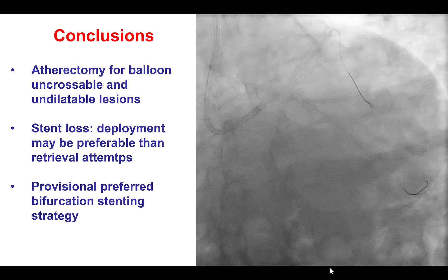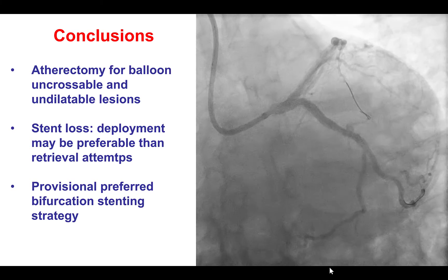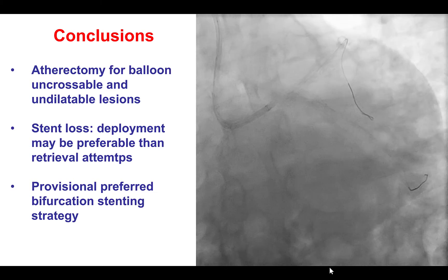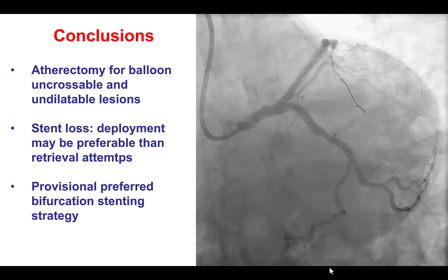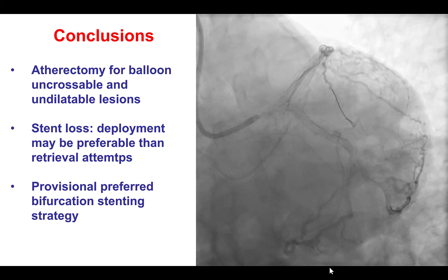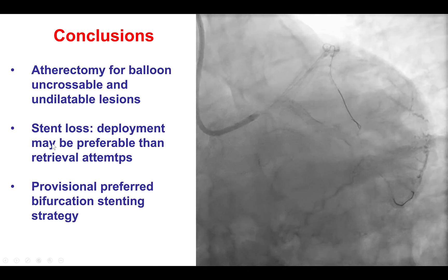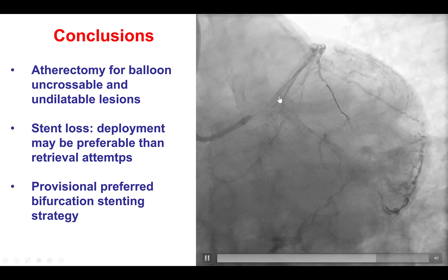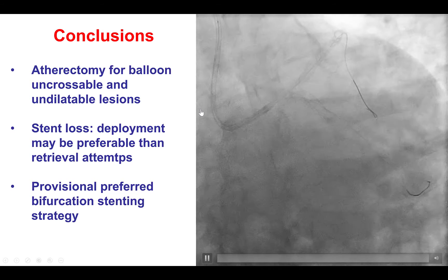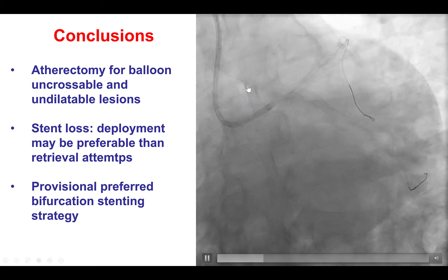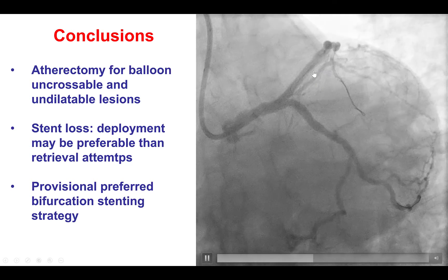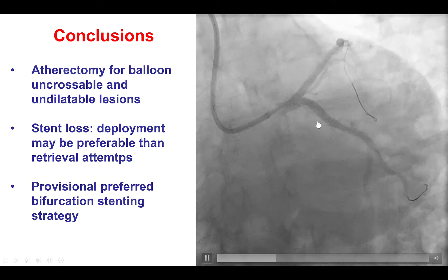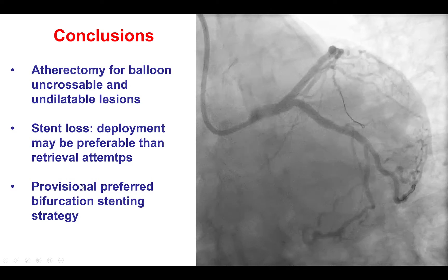In summary, this is an example of a patient with complex multivessel coronary artery disease. Because of diabetes, surgery would have been the preferred approach, but the patient declined. We tried to dilate the lesions, but the circumflex was balloon-undilatable and the LAD was balloon-uncrossable, which is why we performed orbital atherectomy to enable equipment delivery and stent expansion. We did unfortunately experience stent loss in the LAD — retrieval with a small balloon failed, and we ultimately deployed the stent inside the previously placed stent. Deploying or crushing the stent is sometimes safer than aggressive retrieval, as the latter may lead to complications. Finally, the provisional strategy worked well for both the LAD-diagonal bifurcation and the proximal circumflex lesion.